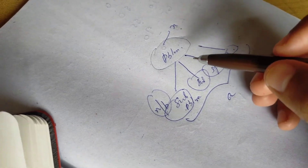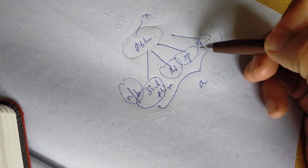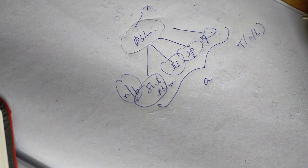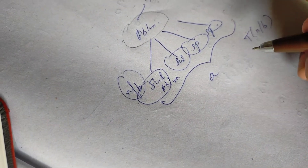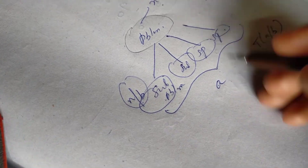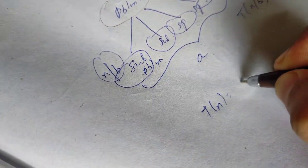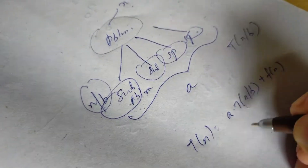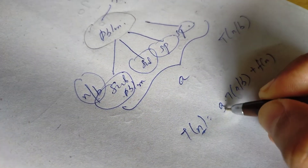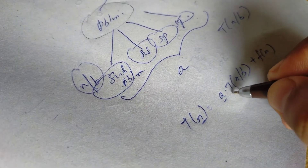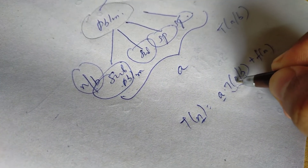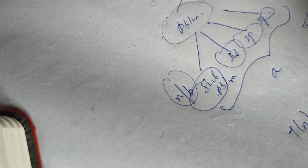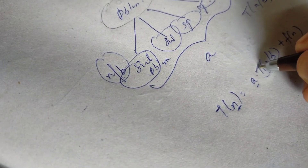We solve each subproblem recursively. In that time, the cost is T(n/b). So T(n) equals a * T(n/b) + f(n). We divide a subproblem of size n/b and solve each subproblem in time T(n/b).